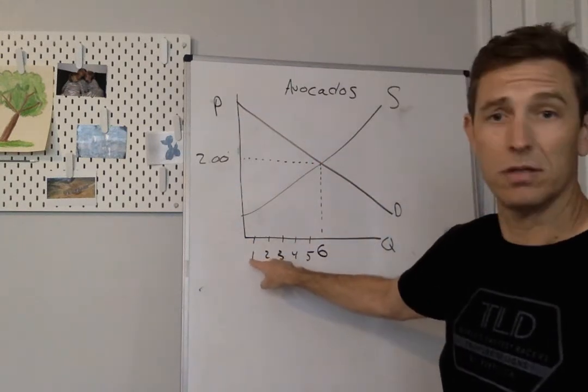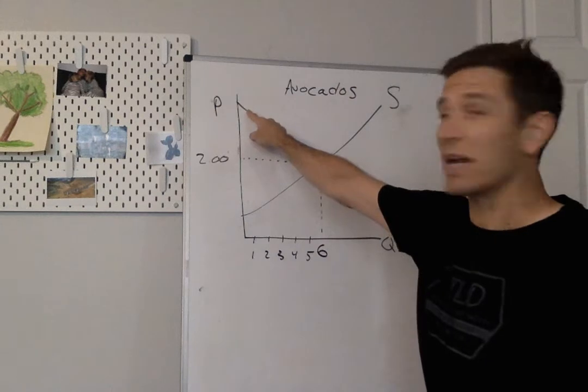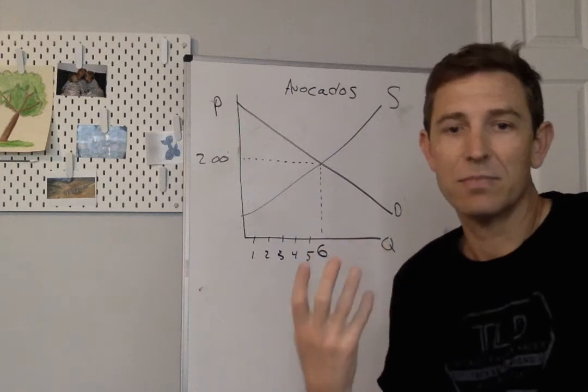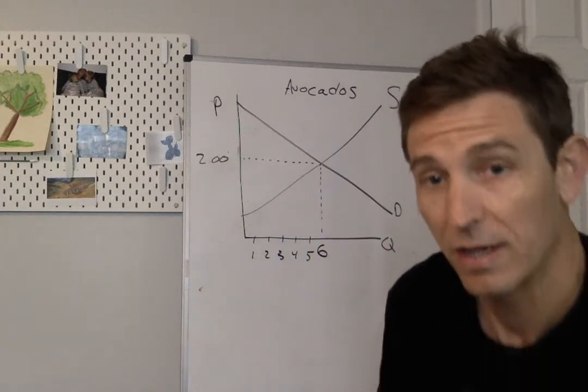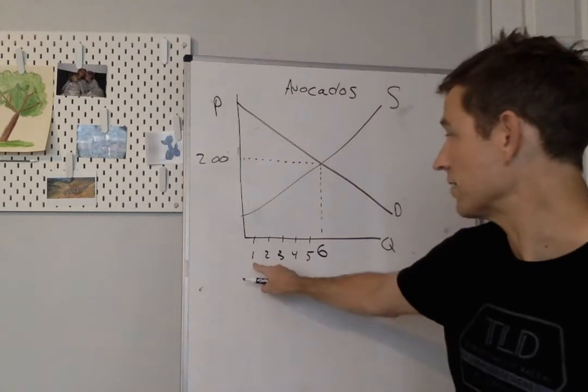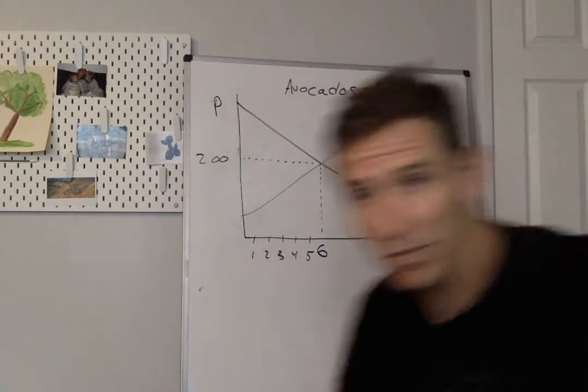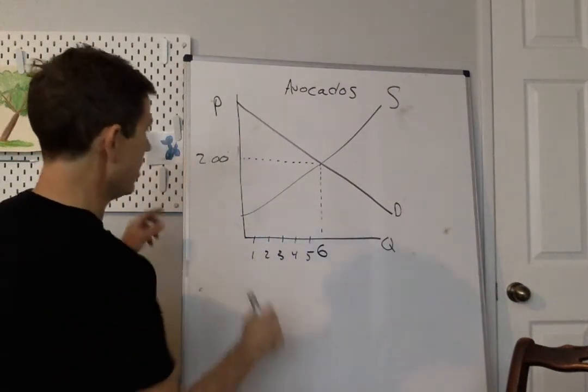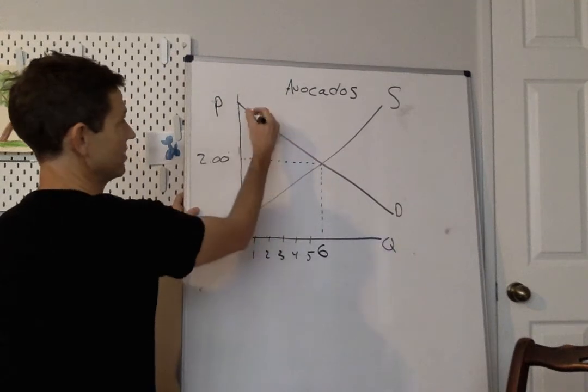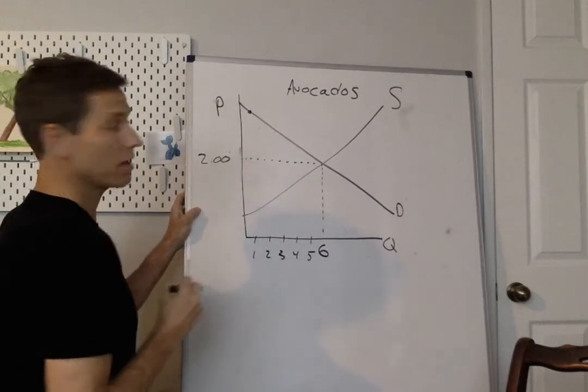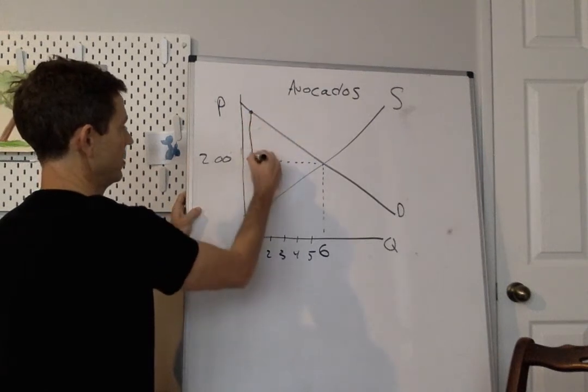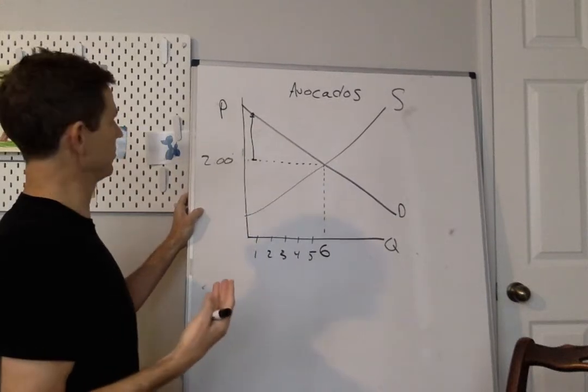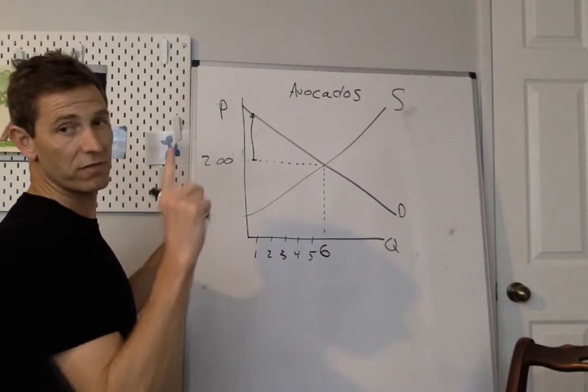For the first avocado, if you read up to the height of the demand curve, way up here, directly above that one, what you're gonna see is the highest price that some consumer out there is willing to pay for the first avocado. So for the very first one, I'm gonna step over to the other side here. For avocado one, the amount of consumer surplus that we're gonna get is this vertical distance between our demand curve all the way down to the price line. So this vertical line that I've got right there, that would represent our consumer surplus for the first avocado.